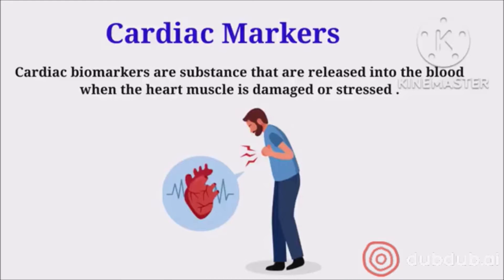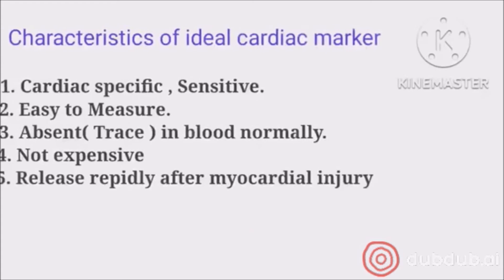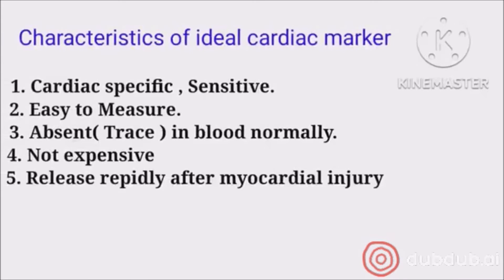How much damage has been done to the heart can be detected by checking the level of cardiac markers in the blood. Since these markers are present in the heart only, if the heart cells are getting damaged, these markers come out and enter the bloodstream. Through this we can find out whether the patient had a heart attack or not. The second question is: what should an ideal cardiac marker be like — what characteristics should it have?